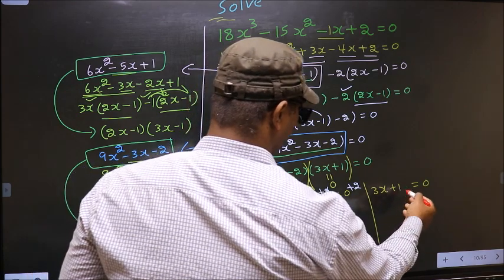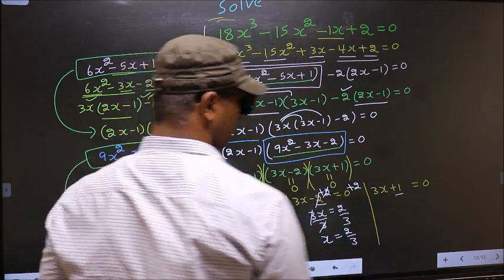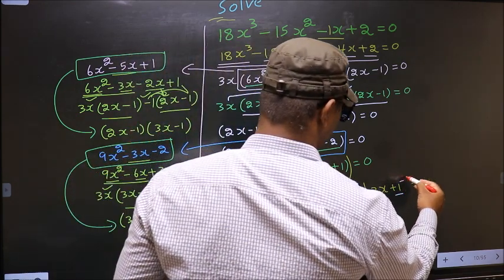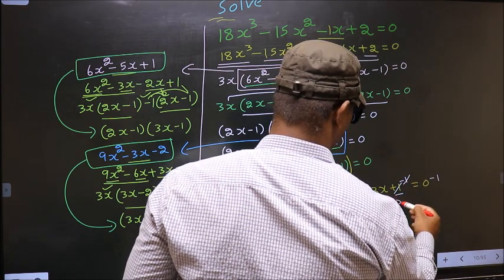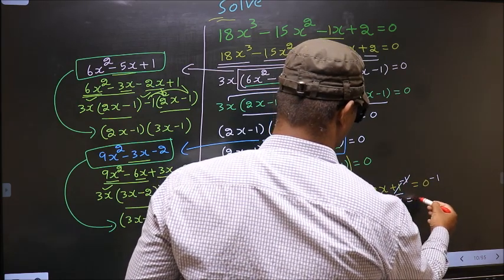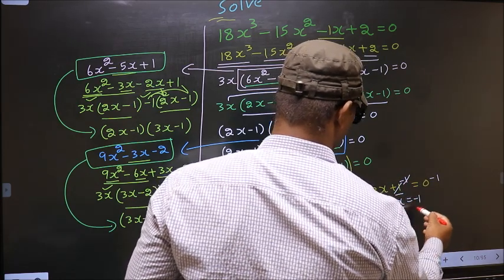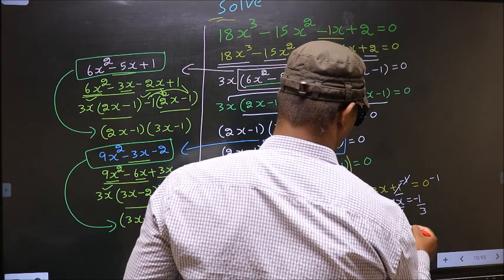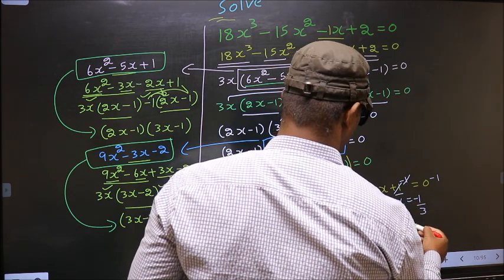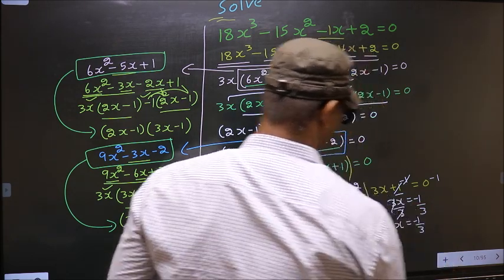Now here I should remove plus 1. For that, you subtract 1. You get 3x equal to minus 1. Now I should remove 3, so you divide by 3. You get x equal to minus 1 by 3.